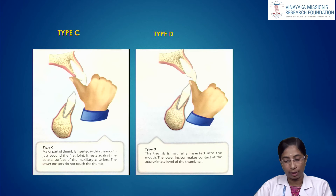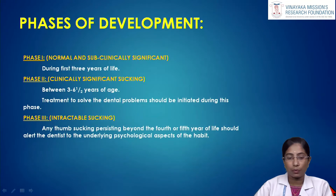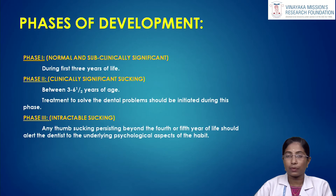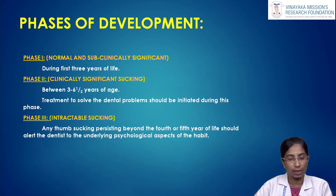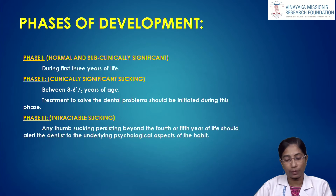Phases of development of thumb sucking habit: Phase 1 is normal and sub-clinically significant, occurring in the first two to three years of life. Phase 2 is clinically significant sucking, between three to six years of age — treatment to address the problem should be initiated during this phase. Phase 3 is intractable sucking — any thumb sucking persisting beyond four to five years of age should alert the dentist to the underlying psychological aspects.